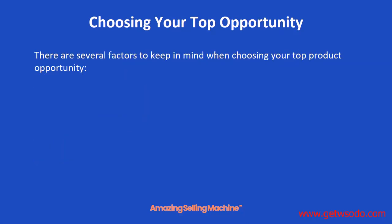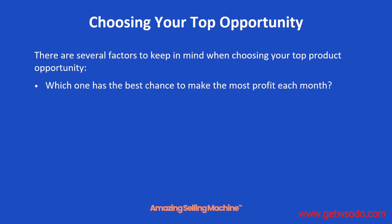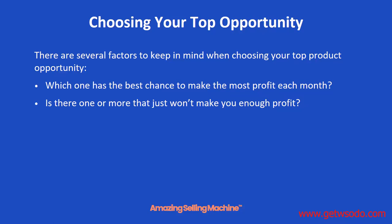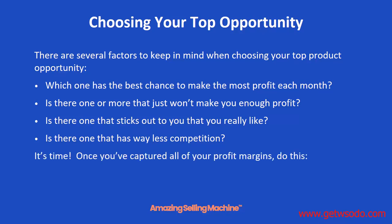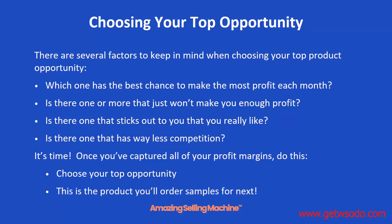There are several factors to keep in mind when choosing your final top product opportunity. Which one has the best chance to make the most profit each month? Is there one or more that simply won't make you enough profit — then you can just eliminate them right away. Is there one that sticks out to you that you really like and still meets the other criteria? Or is there one that has way less competition and you know it'll be easier to compete with? Once you've captured all your profit margins in the product opportunity spreadsheet, choose your top opportunity — this will be the product that we order samples from in the very next lesson.